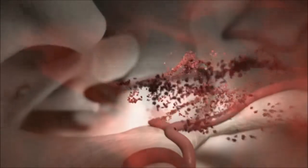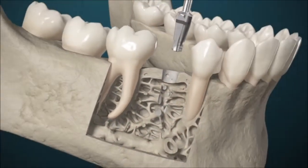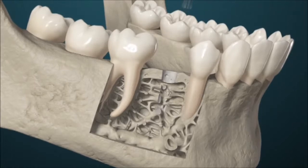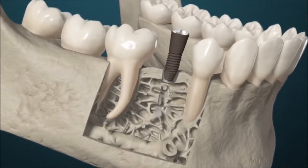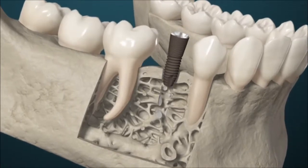The titanium implant is inserted where the tooth was previously lost. At first, the only force holding the implant in place is mechanical friction. This is called primary implant stability.